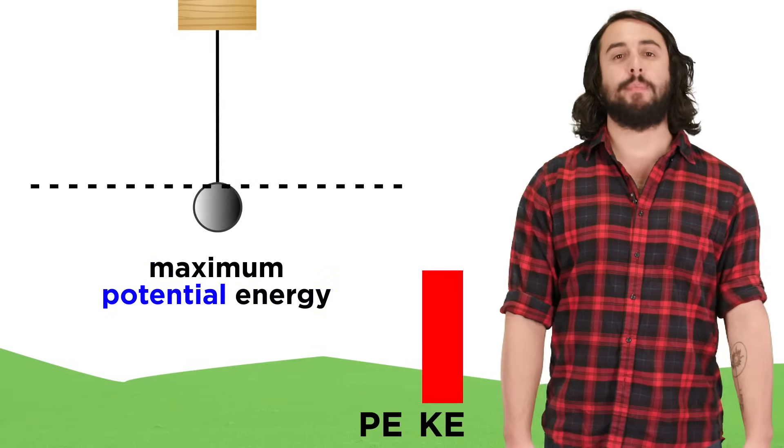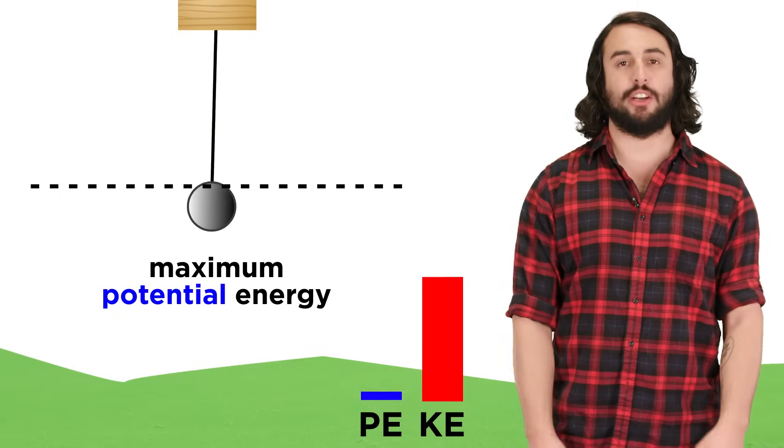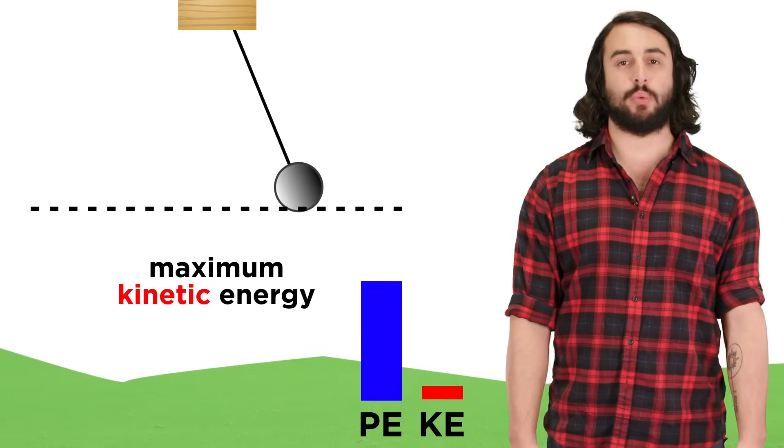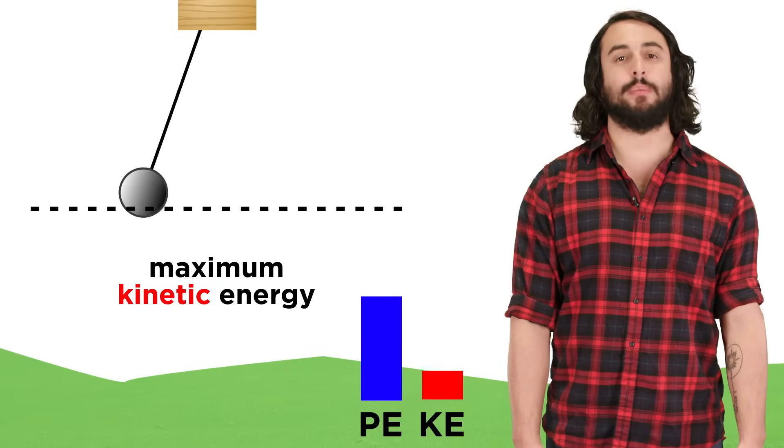At the top of the swing, the pendulum possesses its maximum potential energy and zero kinetic energy. At the very bottom of the swing, it possesses its minimum potential energy and its maximum kinetic energy.